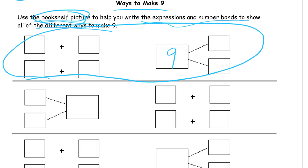So let's say we're using 1 and 8. So we have the two expressions are going to be 1 plus 8. And the other expression that goes with this number bond is going to be 8 plus 1.